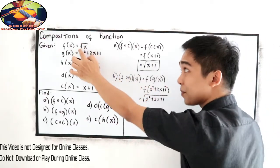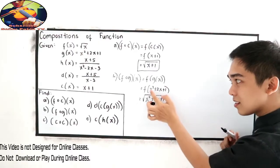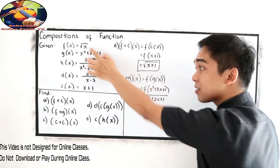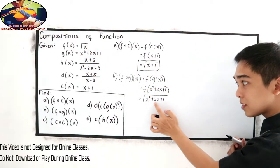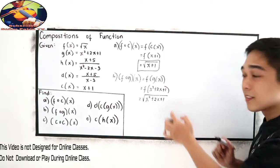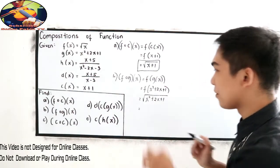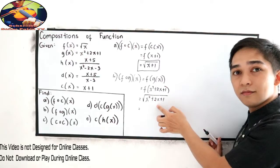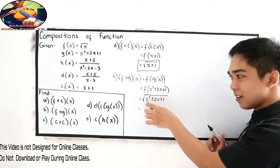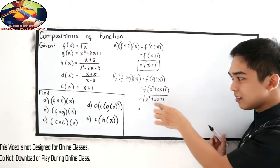Square root, just copy the square root. Then in this case, our x will be x squared plus 2x plus 1. Can we simplify?